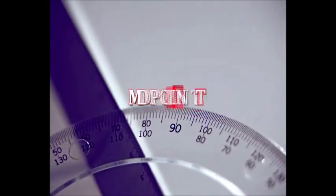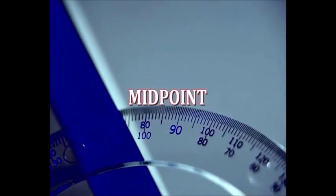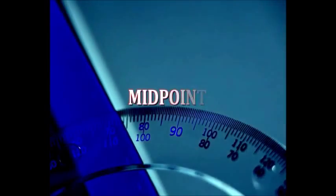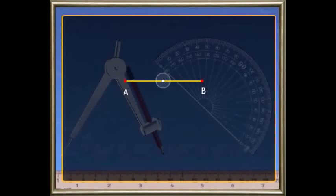Now, let us focus on learning about the midpoint. A midpoint is that point of a line segment which divides it into two equal parts. So, the midpoint of the line segment AB is at M.